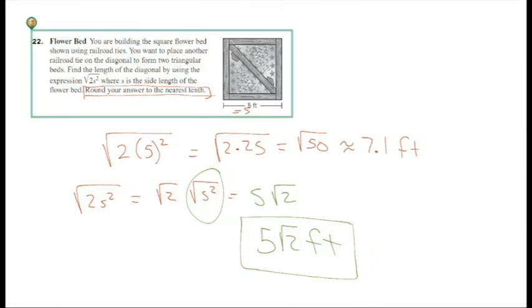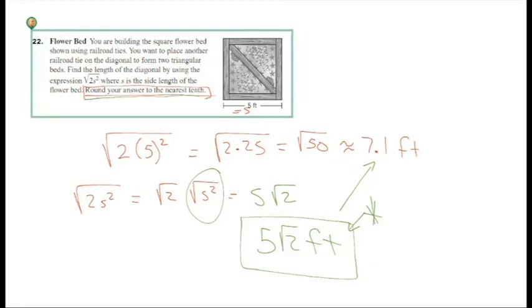Mr. Taylor's tip for standardized tests: a lot of times the answers are these simplified radicals — these exact answers. If you put 5 times the square root of 2 in the calculator and round to the nearest tenth, you get 7.1. So if you do the work on a standardized test, get 7.1, and have four multiple choice answers, type each of those multiple choice answers into the calculator to see if you get the same decimal. Even if you have difficulty simplifying in simplest radical form, you can still get the correct multiple choice answer by working backwards.